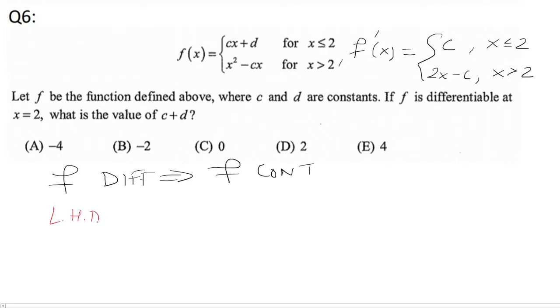So I'm going to call left-hand derivative LHD, and here we're interested at x equals 2. So let's look at x equals 2 for both of these. Plug in x equals 2 for the left-hand, for x less than or equal to 2, to get c. Now for the right-hand, plug in 2 to get 2 times 2 minus c, which is 4 minus c.